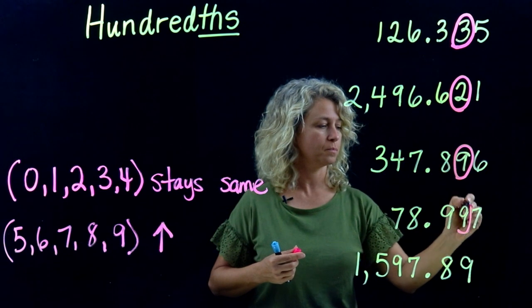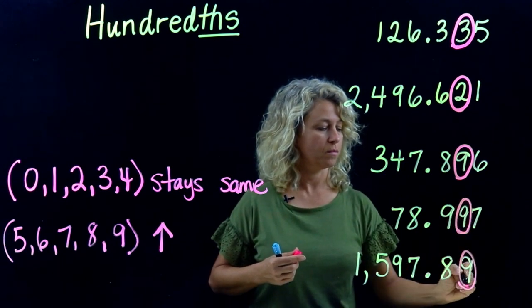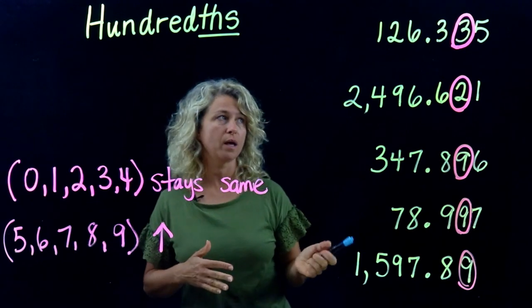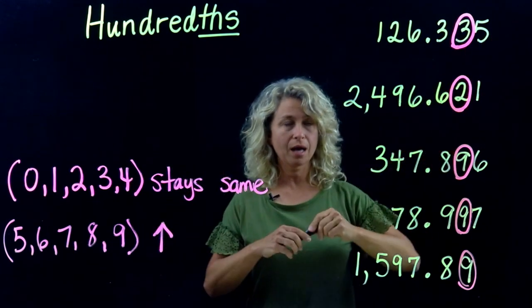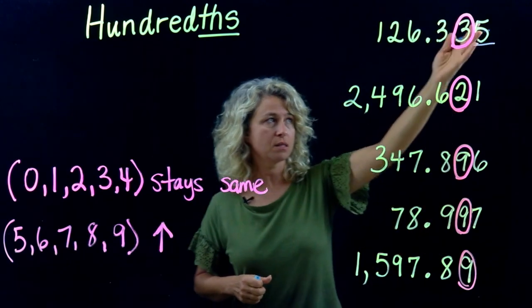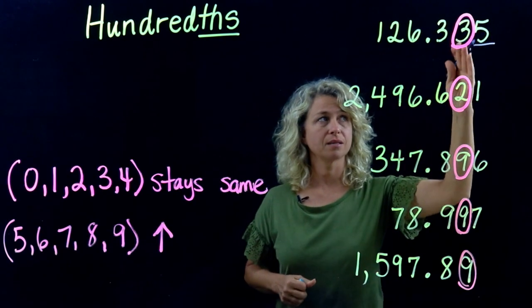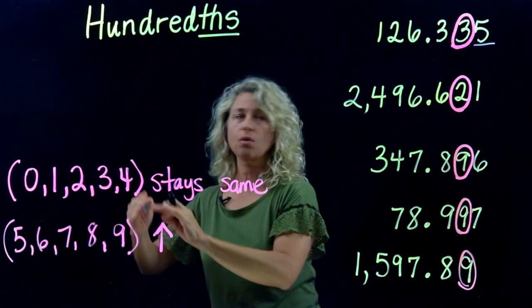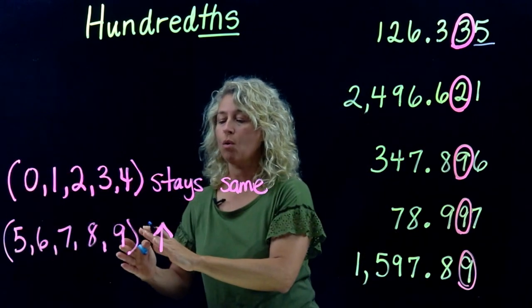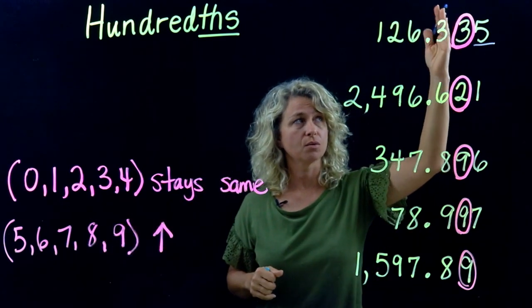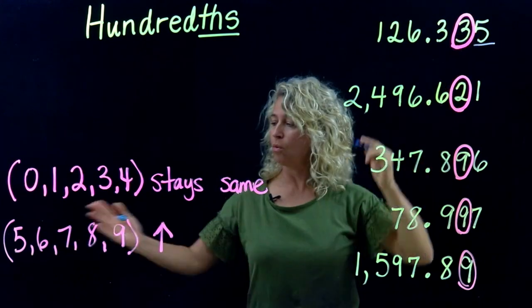All right, let's start with the very first one. We will underline the number to the right, and this number is the number that we look at to compare. Is it zero to four, or is it five or more? Five or more adds one to that particular digit.